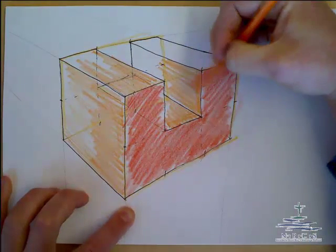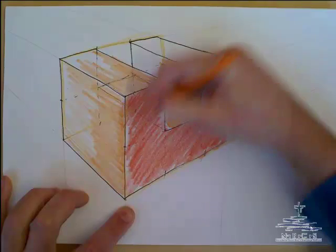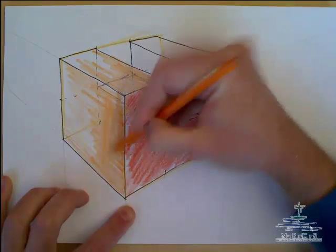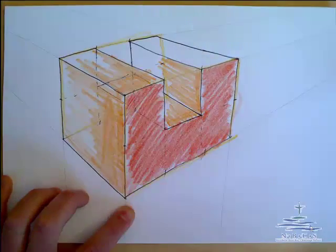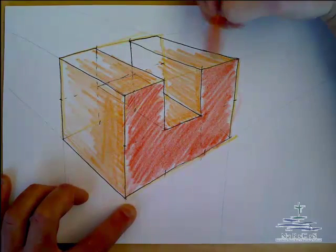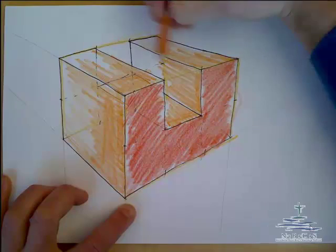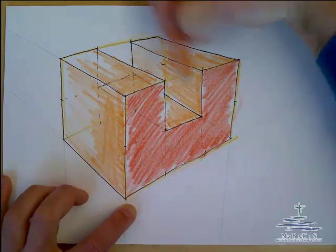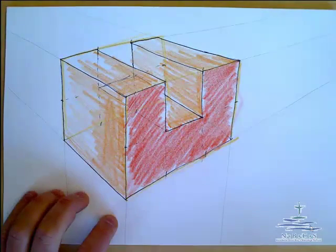So you can see we can make it a little darker on all these edges, like so, and just continuing on lightly towards where the light's coming from. So you can see we've got a cutout there.